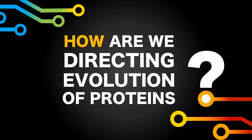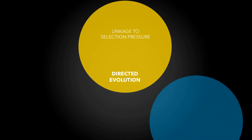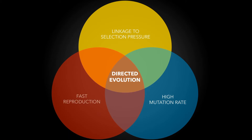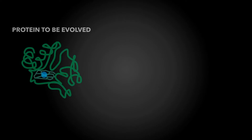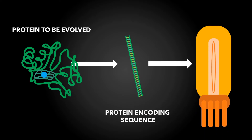Now, you are probably wondering how we are directing evolution of certain proteins. In general, if one wants to direct evolution, the most important thing is to link a protein characteristic to selection pressure. To make the selection fast, we need a high mutation rate and rapid reproduction. Based on that background, we start directed evolution by taking our protein, or more precisely its related gene, and putting it into fast-reproducing bacteriophages.